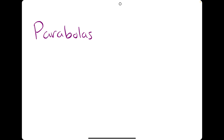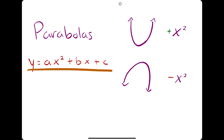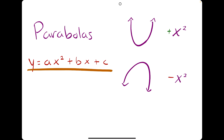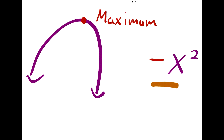Quadratic functions, often known as parabolas, open up if you have a positive x squared term and open down if you have a negative x squared term. You'll typically see the form y equals ax squared plus bx plus c, where a, b, and c are constants. The a value being positive or negative determines whether it opens up or down. Whether the function opens up or down tells us whether we have a maximum or a minimum — when it opens up we have a minimum, and when it opens down we have a maximum.